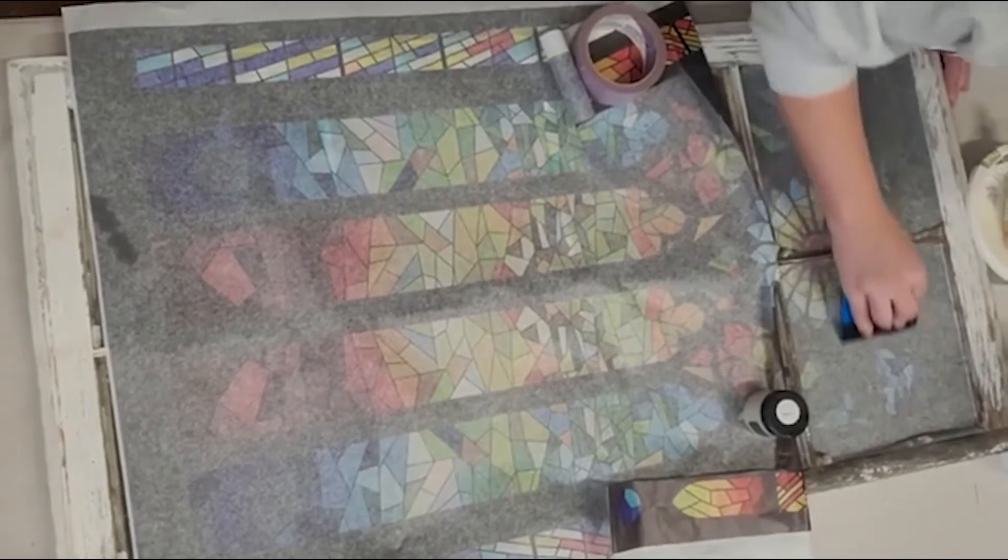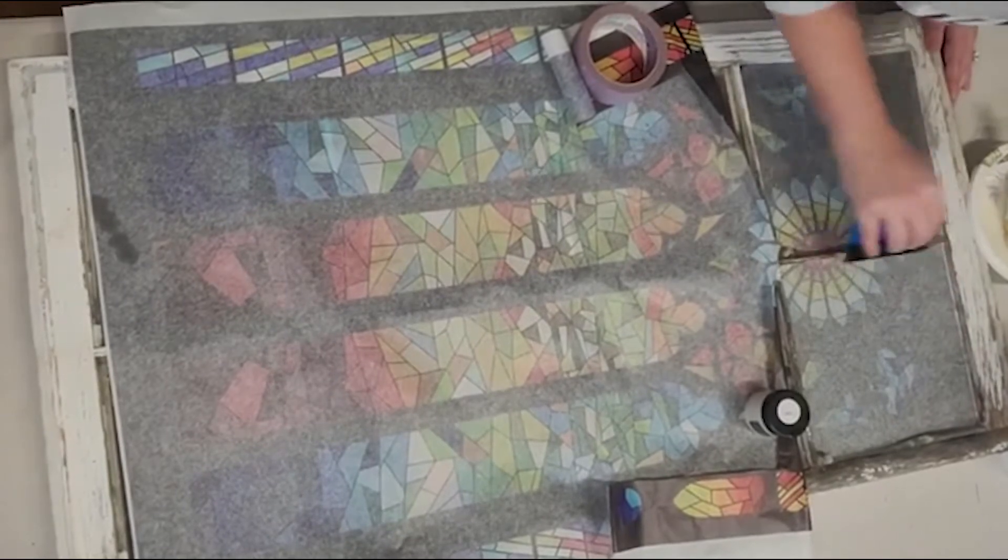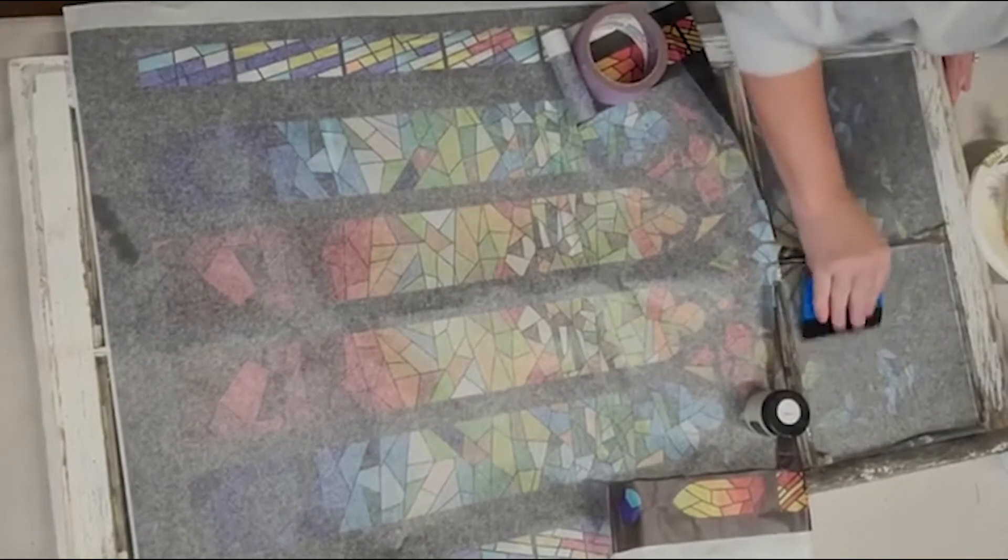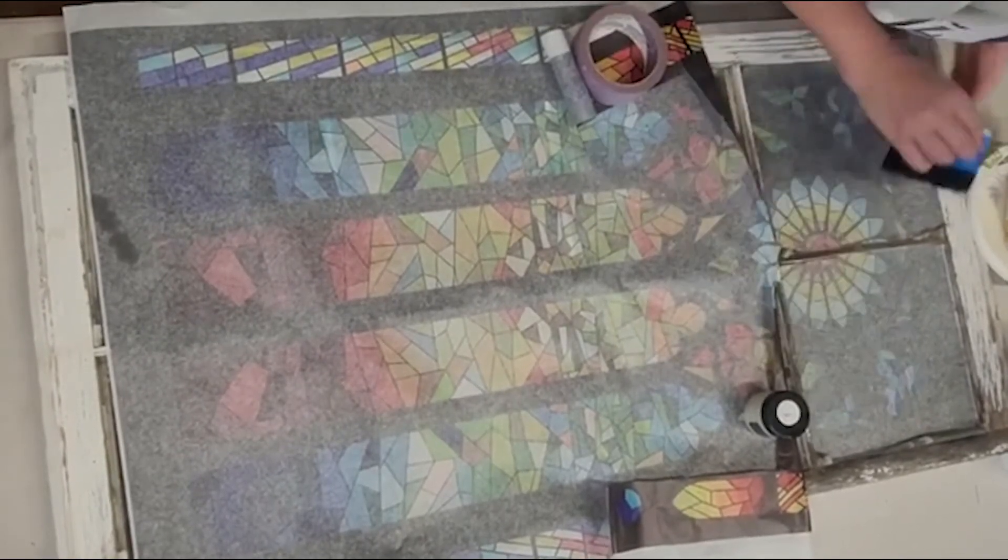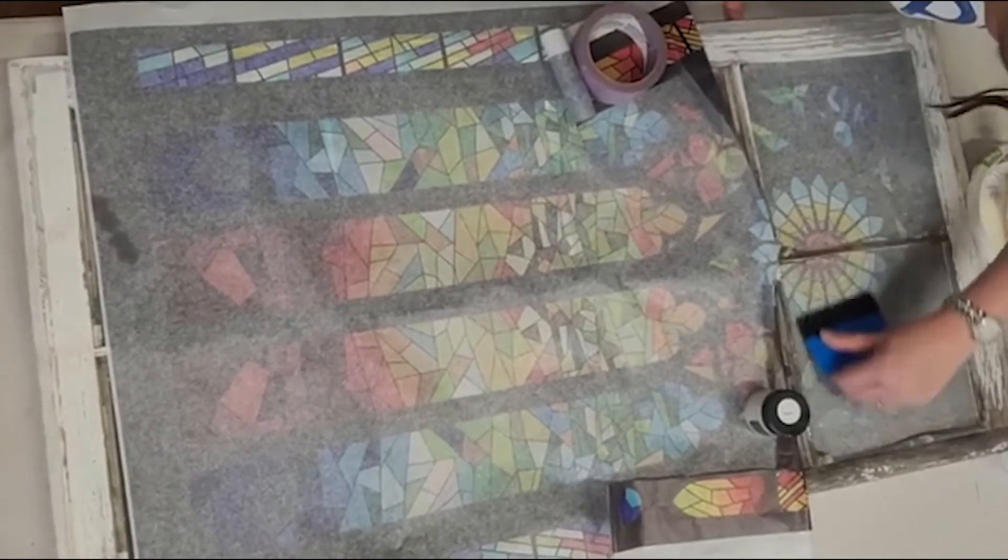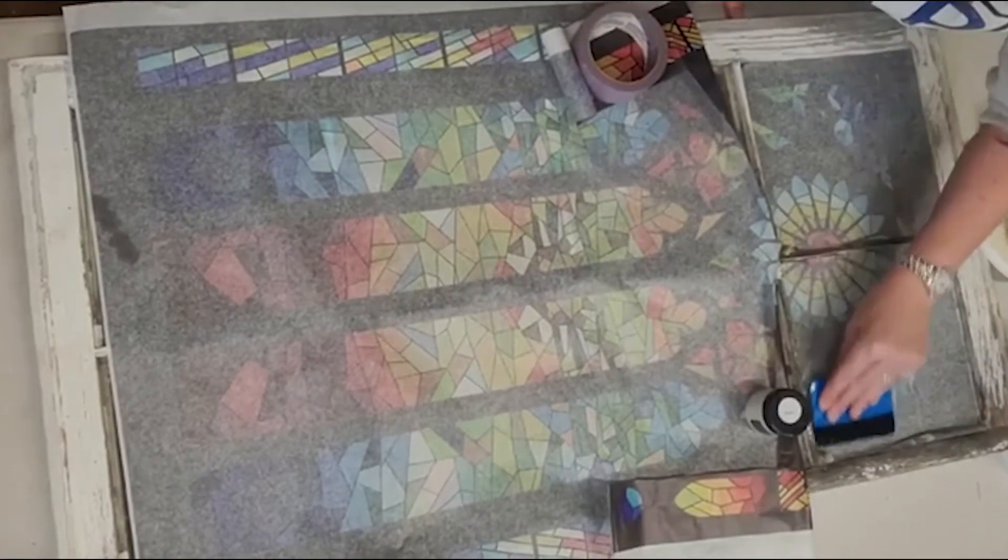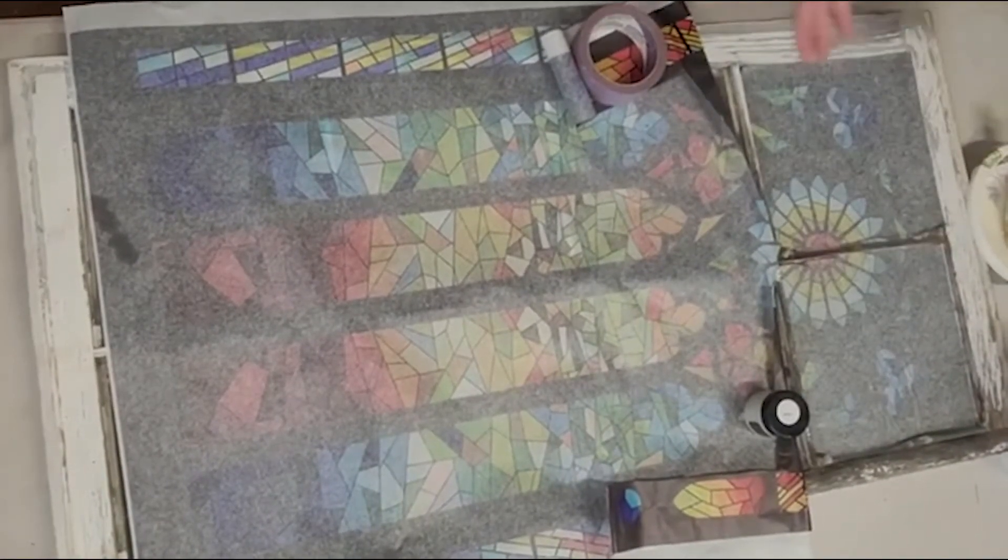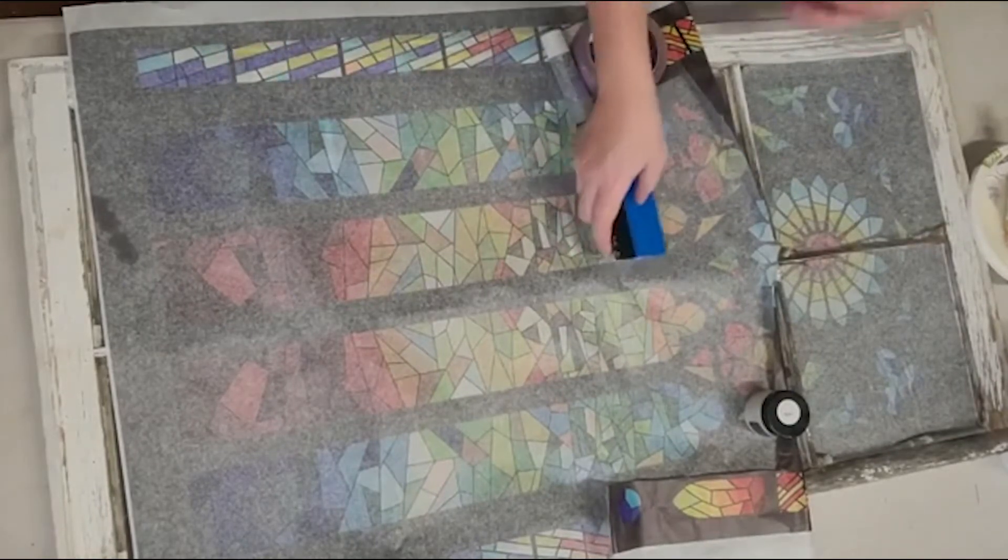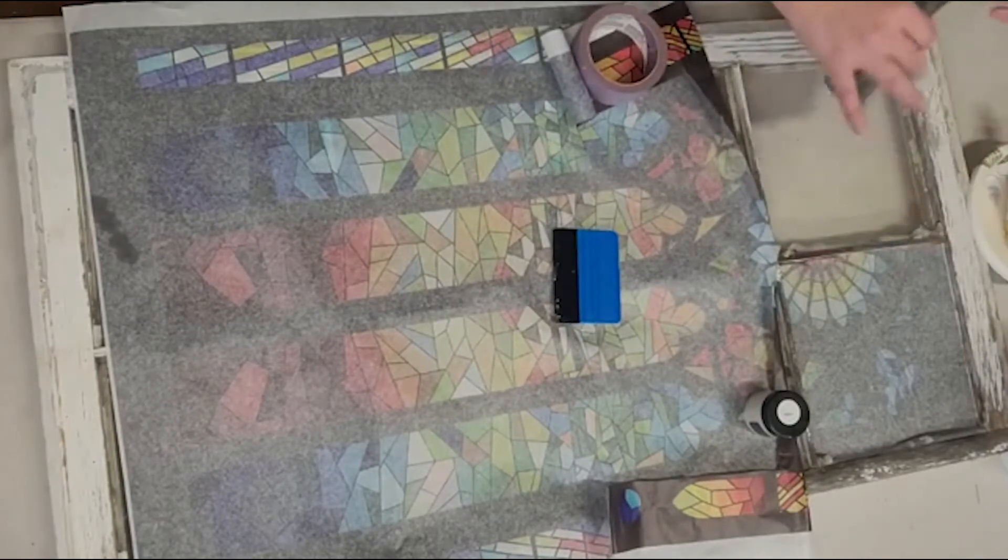I can feel a couple little wrinkles and bubbles kind of wanting to form. So now I'm going to go back and just kind of flatten out what I can. But to be honest, this is supposed to look like an old stained glass window, so if there's a couple wrinkles here and there it's going to add to it because the window is old and funky. So I think for one thing to be perfect and the other thing to be old, it's kind of like a little bit weird.